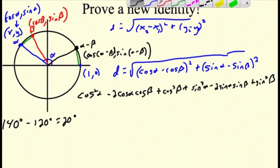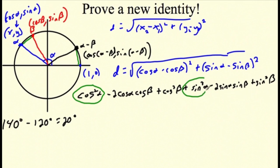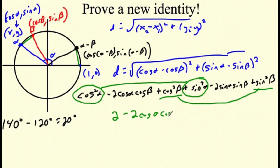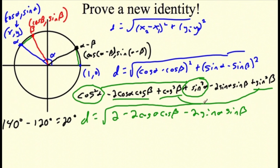Something good happens here: cosine squared alpha plus sine squared alpha equals 1 by the Pythagorean identity, and cosine squared beta plus sine squared beta also equals 1. So those four terms combine to give 2. That leaves us with the square root of 2 minus 2·cosine(alpha)·cosine(beta) minus 2·sine(alpha)·sine(beta) — that is D1.